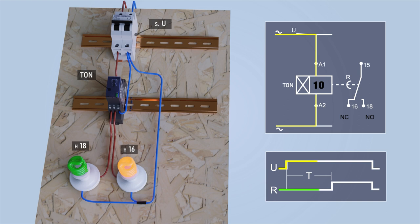When the set delay time expires, auxiliary contacts 16 and 18 switch and change state. Contact 18 is closed and contact 16 is opened.